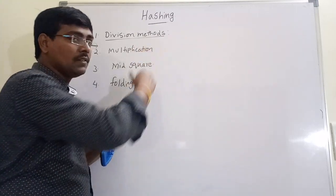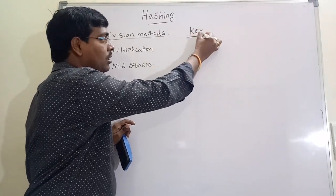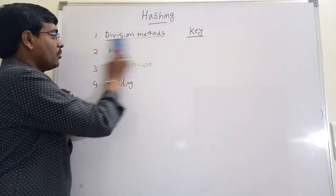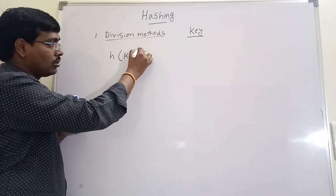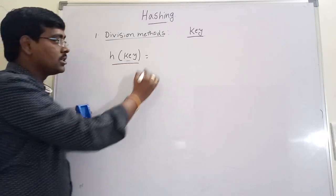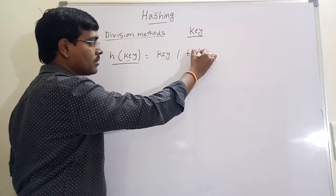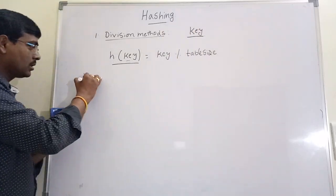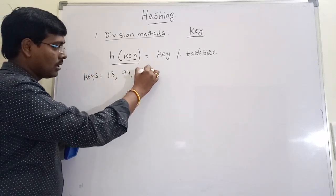Now first we will discuss the division method. In the division method, if we want to place a key into the hash table, the function is: h(key) = key modulus table size. We are applying hashing on the key, which equals key mod table size.